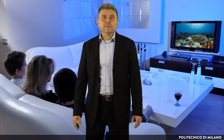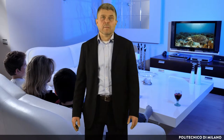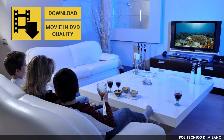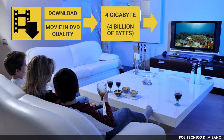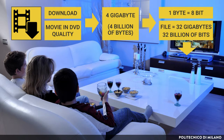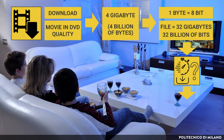To understand the current requests in access networks, let's make a simple user-side example. Say you want to download a movie in DVD quality on a network, and the file is 4 GB — that is 4 billion bytes. Since each byte is 8 bits, the file is 32 Gbits long, that is 32 billion bits. How much time do you need to download it?